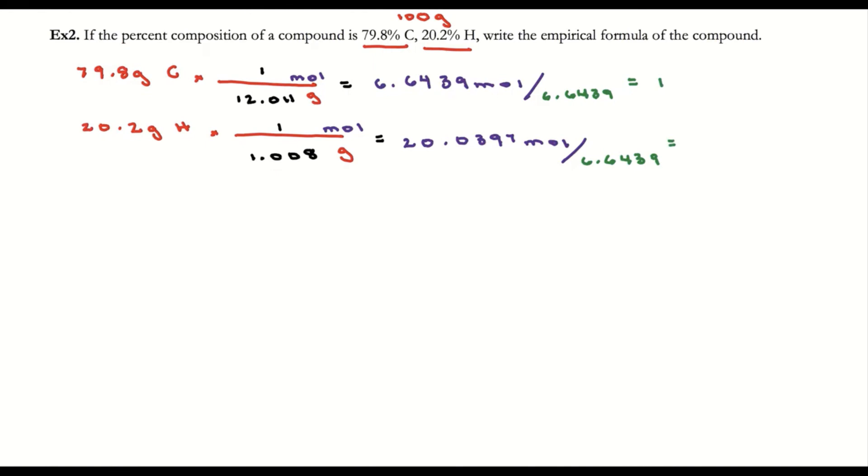When I take 20.0397 and divide by 6.6439, I get 3.016. I'm comfortable rounding that to three because I've got 3.0 something. To write the empirical formula, I've got one carbon and three hydrogens, so it's CH3.